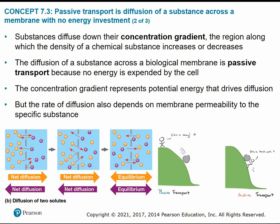Substances always diffuse down their concentration gradient — the difference in concentration on either side of a membrane. This is passive because there's no energy expended by the cell. Think of it as rolling a ball down a hill: you just let it roll, it goes on its own. Or floating downstream — you just go with the flow and the current without actively using any energy. Or riding your bike down a hill — you just coast and it goes naturally.